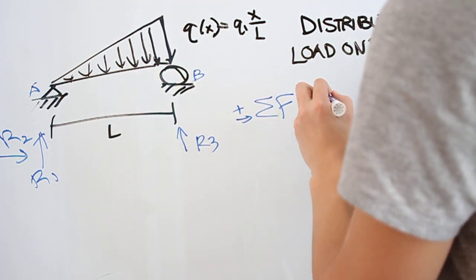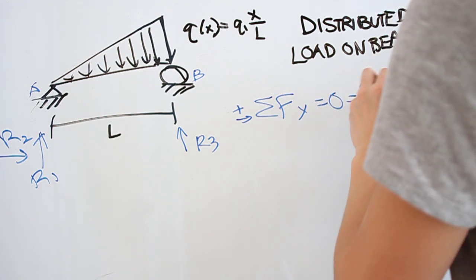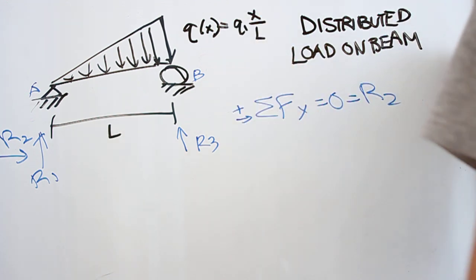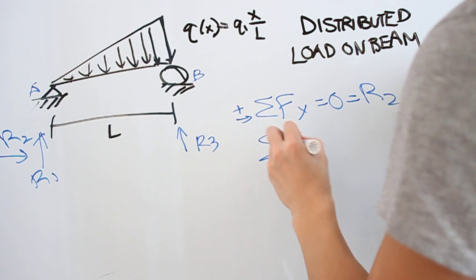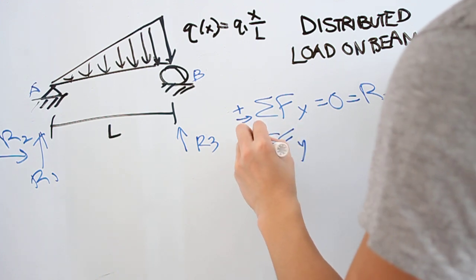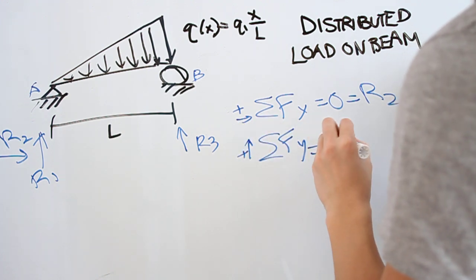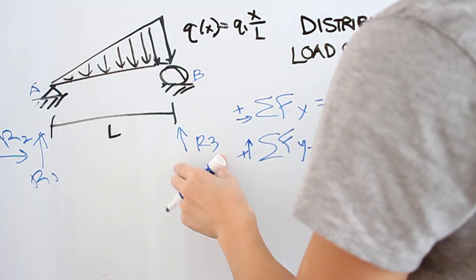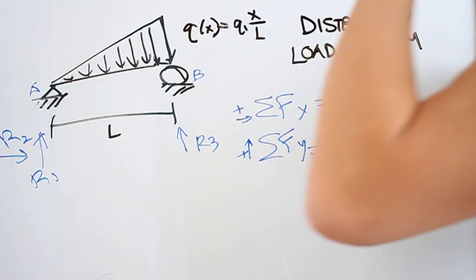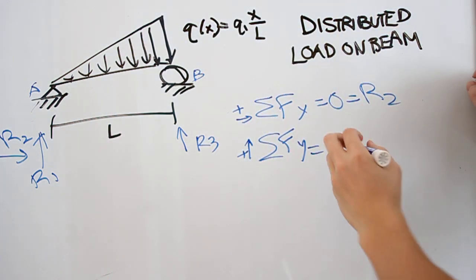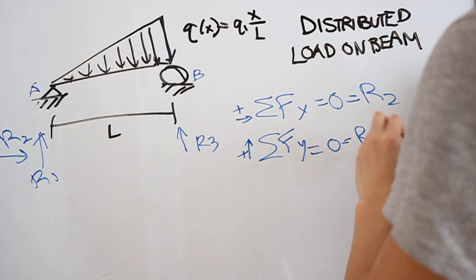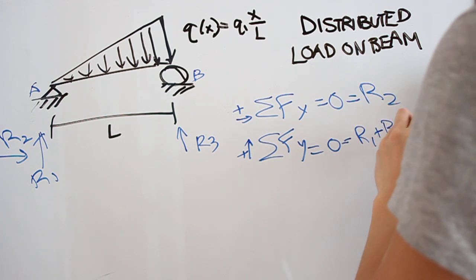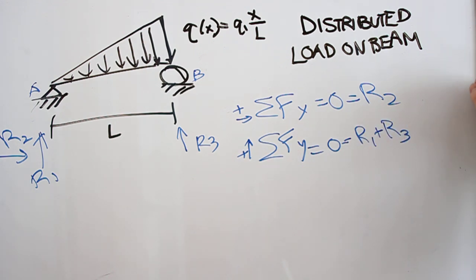The sum of forces in x equals 0, so r2 equals 0 — that should take less than five seconds. The sum of forces in y equals 0, and now we have r1 and r3, plus our distributed load. How do we write the entire distributed load in this equation? That's the key problem.